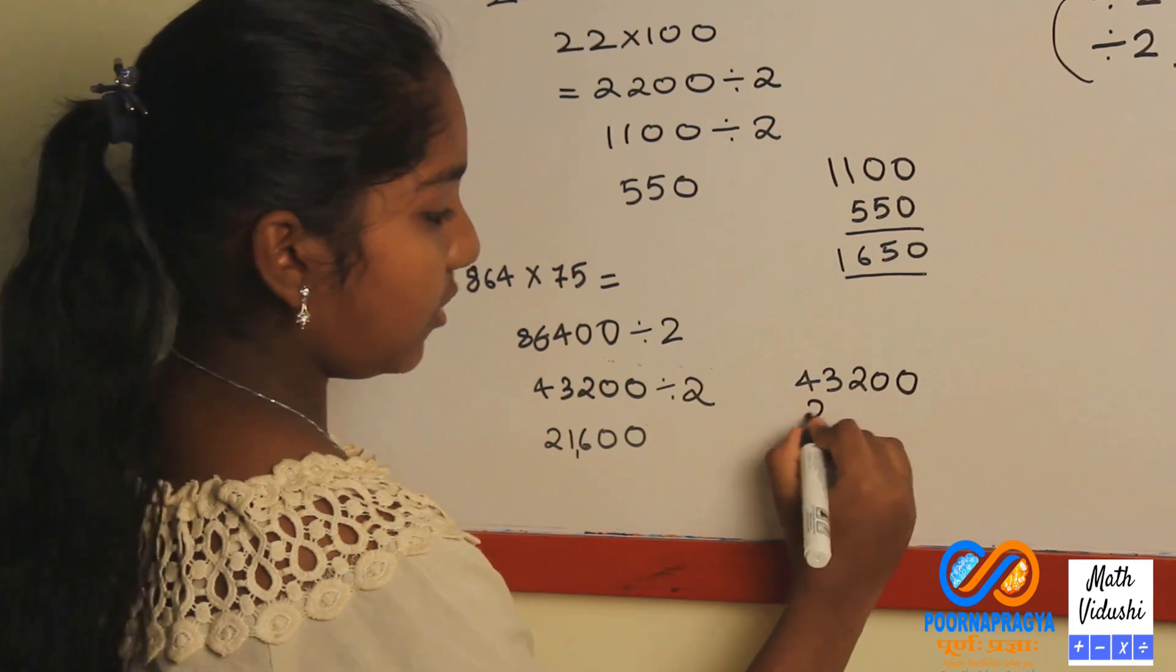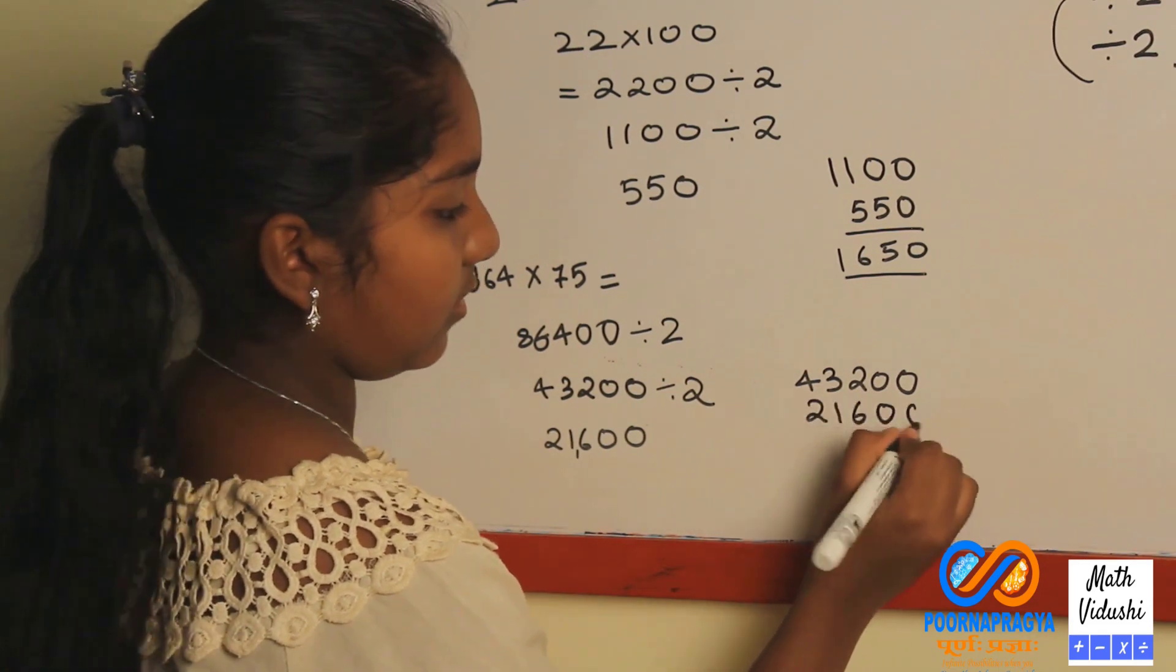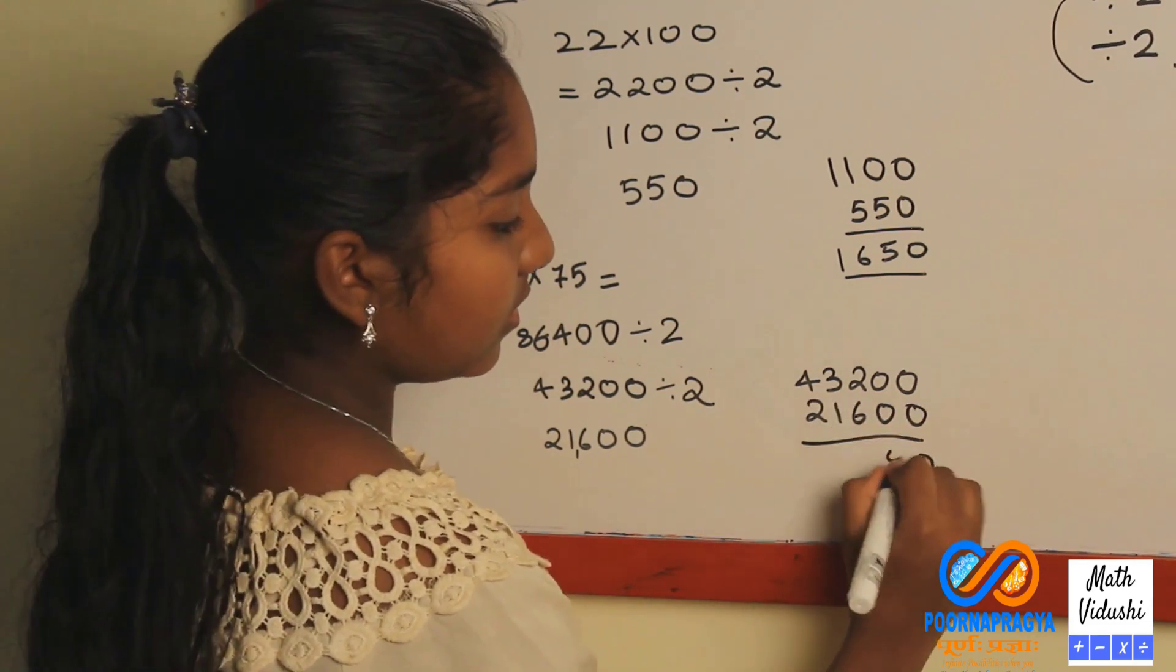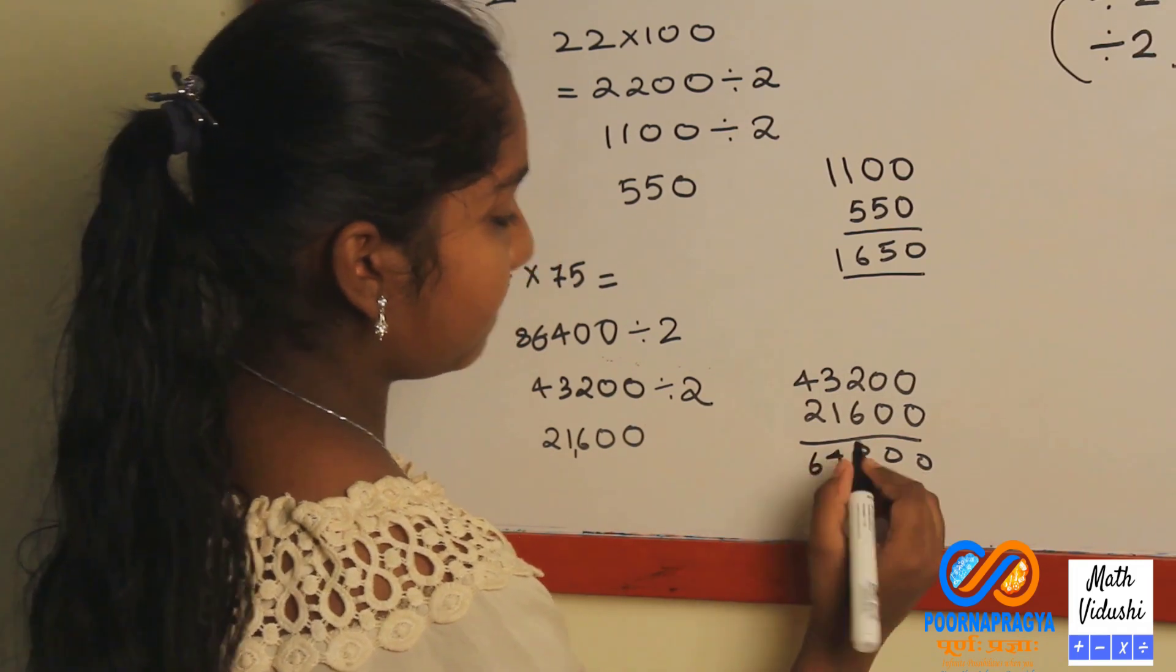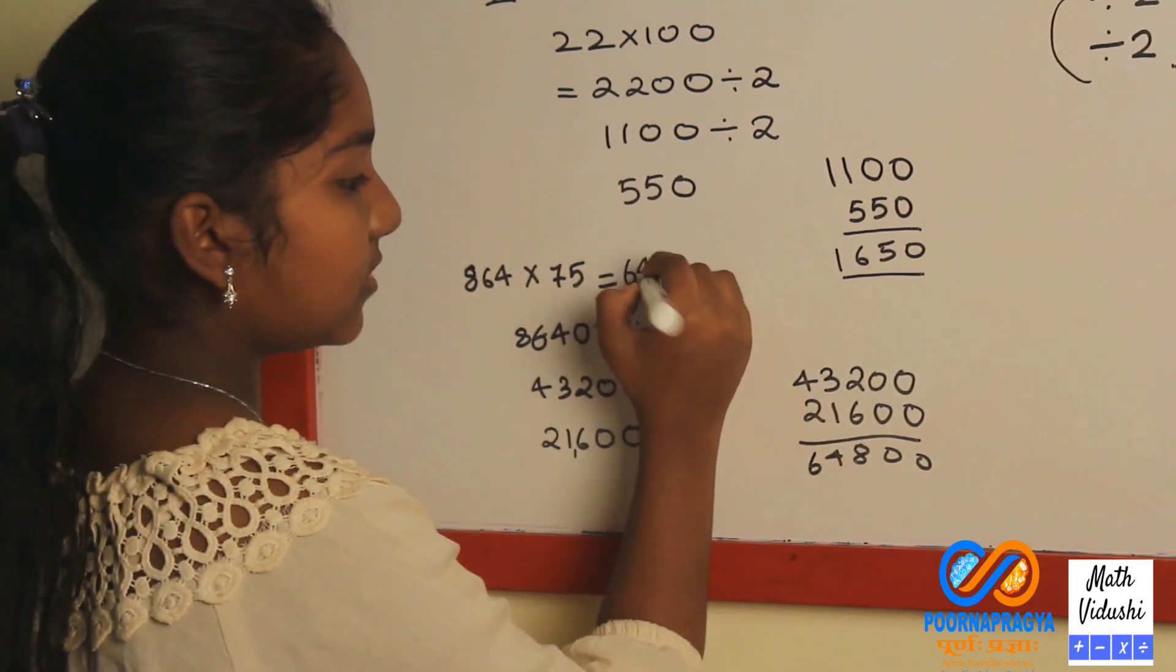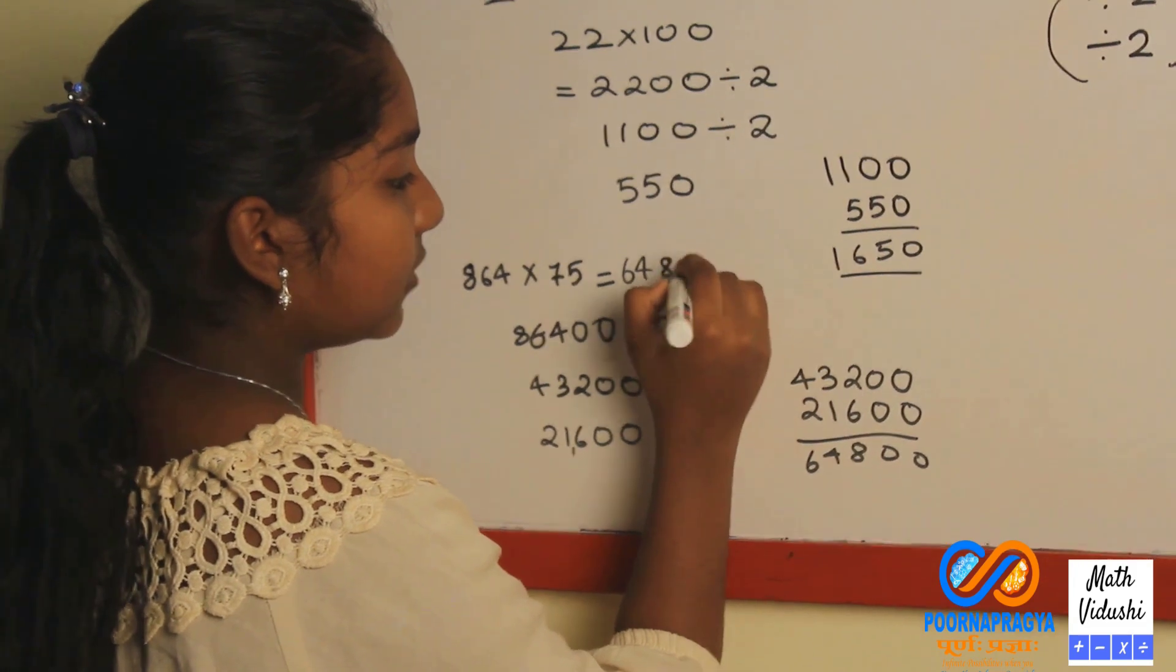Now add 43200 and 21600. The answer for this sum is 64800.